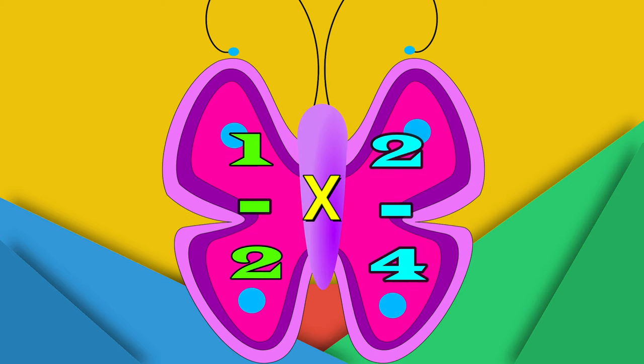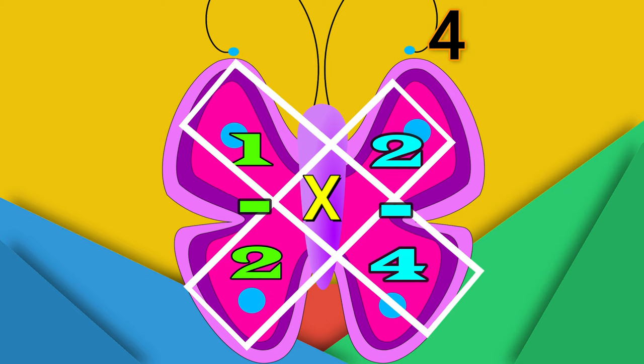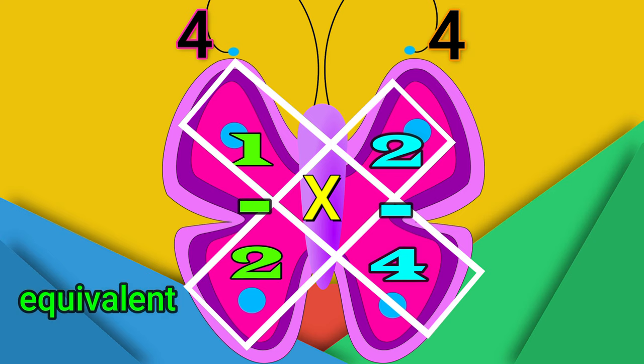Let's try using the butterfly method to compare the fractions one half and two fourths — and what happens here is going to be very interesting. If we use the butterfly method, we're going to do two times two, which gives us four. We're also going to cross multiply four times one — that's also going to give us four. So we have two fours at the top of both fractions. What that means is these two fractions are equivalent, meaning they have the same value. So one half is equivalent to two fourths.